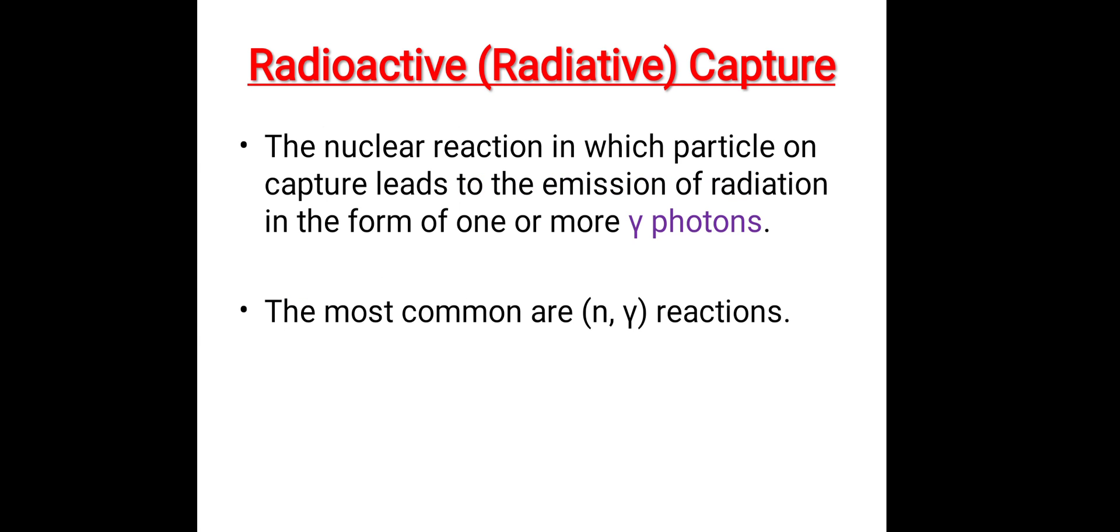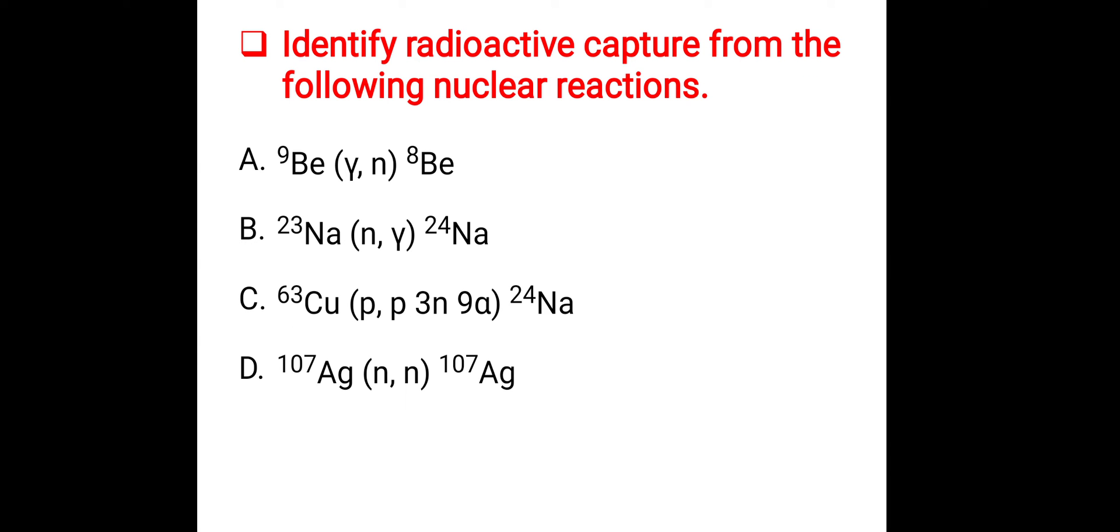Now in our example we have to identify radioactive or radiative capture. The first option involves the emission of neutron. Second option involves emission of gamma. Third option involves emission of proton, 3 neutrons, and 9 alpha particles. Fourth option involves emission of neutron. There is only one option which involves emission of gamma particle with the neutron as a projectile.